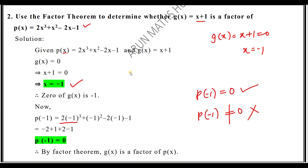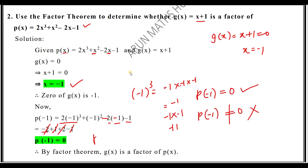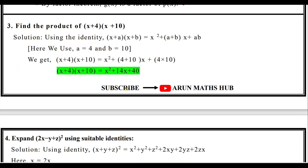Now, (minus 1)³ equals minus 1. So 2·(minus 1) = minus 2. Then (minus 1)² = plus 1. Then minus 2·(minus 1) = plus 2, and minus 1 as it is. So: minus 2 plus 1 plus 2 minus 1. The plus 2 and minus 2 cancel; the plus 1 and minus 1 cancel. Therefore p(minus 1) equals zero. By the factor theorem, g(x) is a factor of p(x).